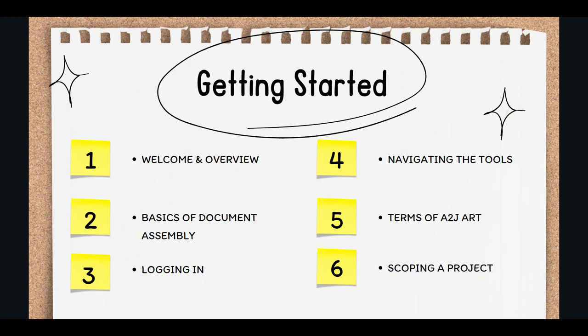We all want to be speaking the same language when we're learning a new software tool. The final part of this section will cover scoping a project. I will help you find that Goldilocks of a document automation project — one that is not too small and not too big. You want to help the pro se litigants complete the desired legal action, but you also want a project that can be completed and managed long term.